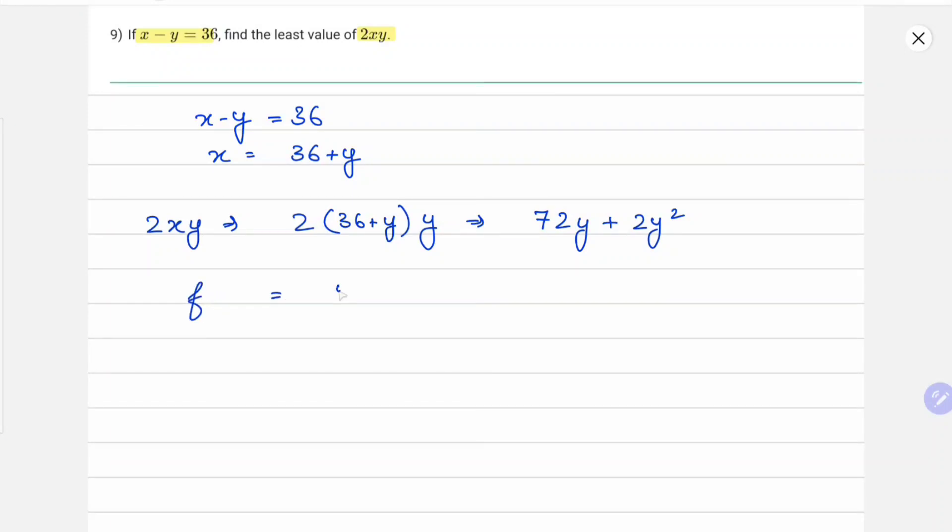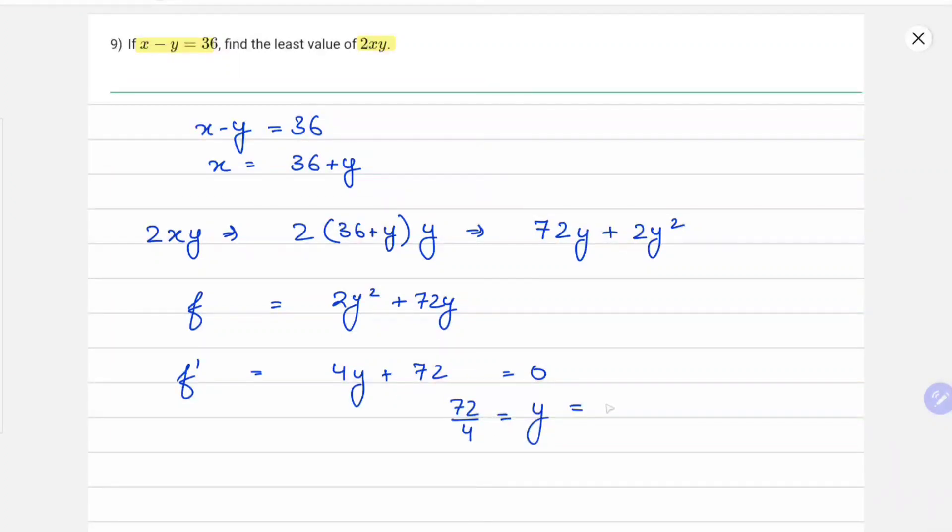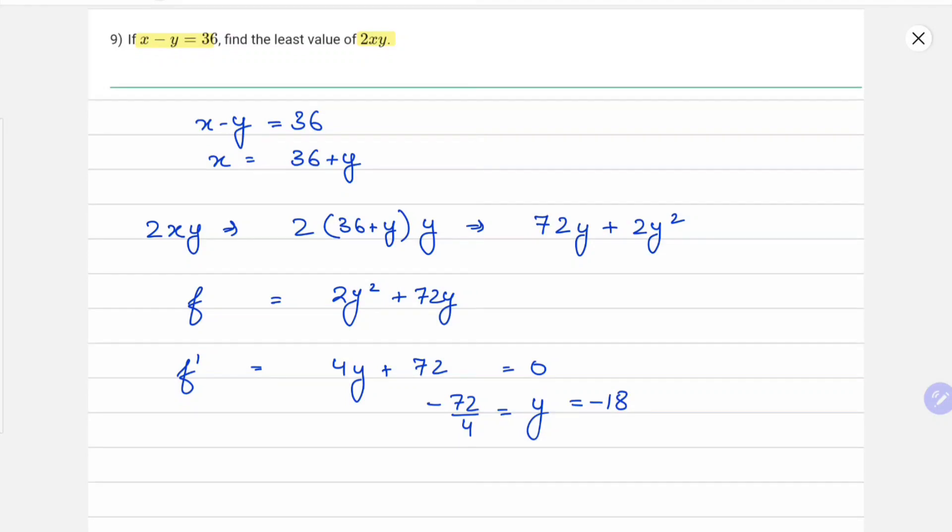Let's differentiate it. We will get 4y plus 72. Putting it equals to 0, we get 72 by 4 equals y, which implies y equals 18. Okay, we did a small mistake - this will be minus 72 by 4, and this comes out to be minus 18.